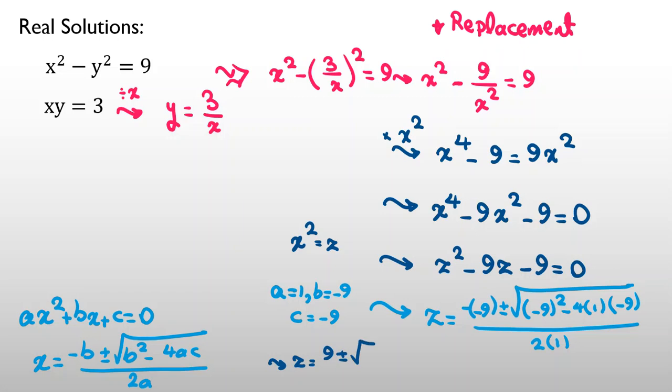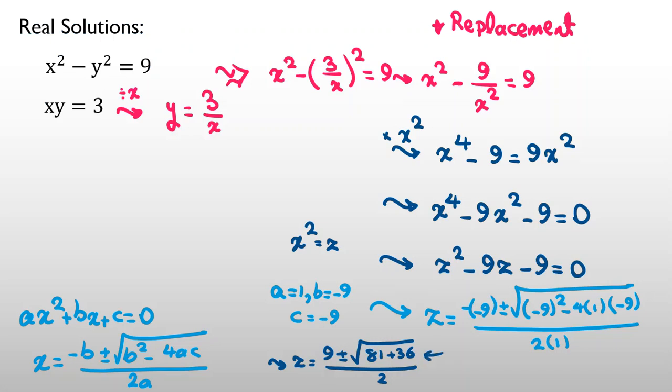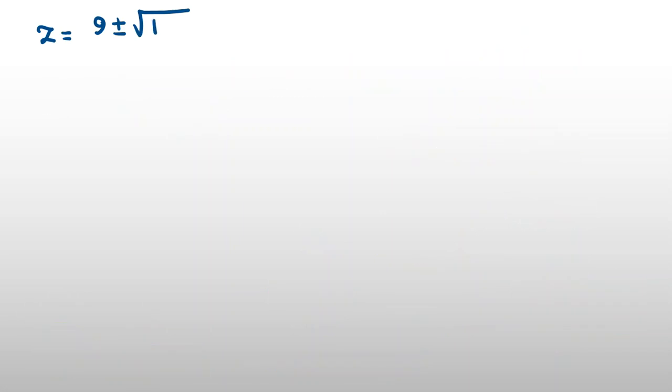Negative negative 9 is 9, plus minus 9 squared, negative 9 squared is 81, minus 4 times 1, times negative 9, is plus 36, all over 2. So, if I write it again here, z equal to 9 plus minus square root of 81 plus 36 is 117,